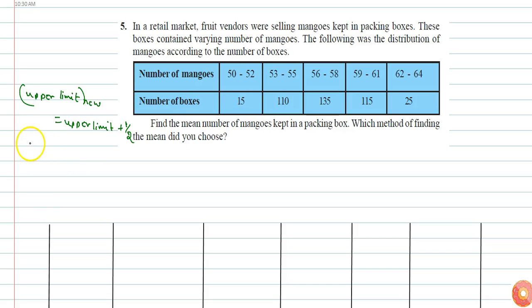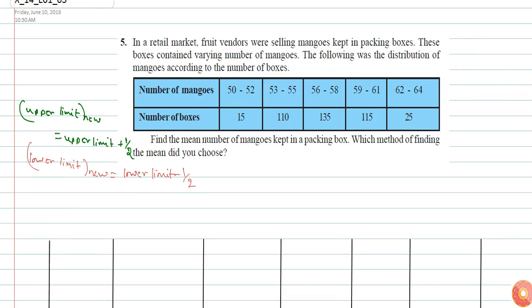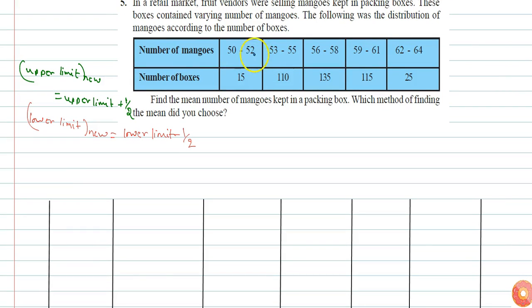Lower limit new equals lower limit minus one by two. I am doing this to make the interval continuous, since now there is a gap of one in intervals. So if I do this, I'll get upper limit plus one by two, lower limit will be lower limit minus one by two.